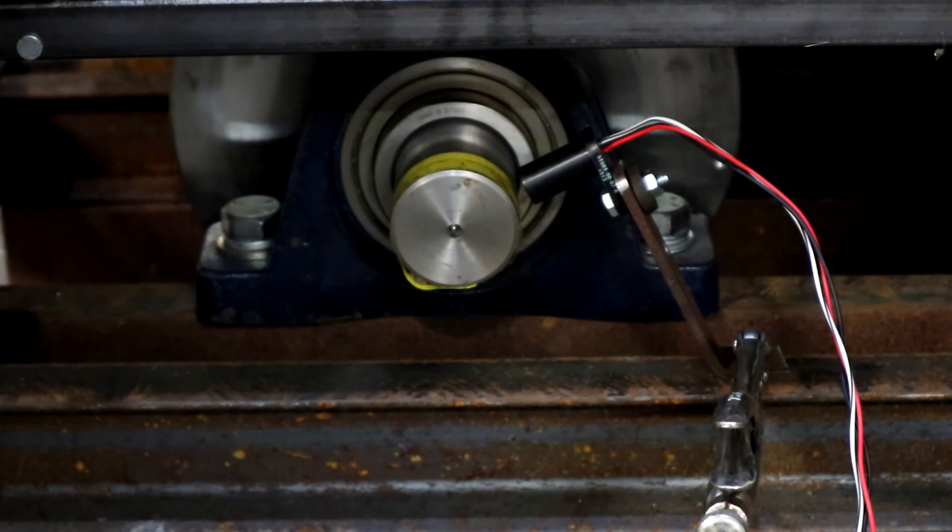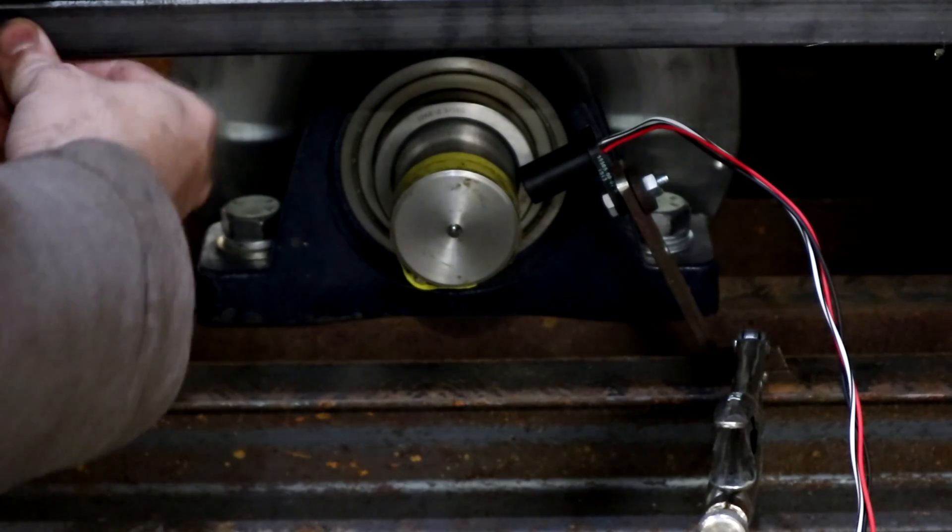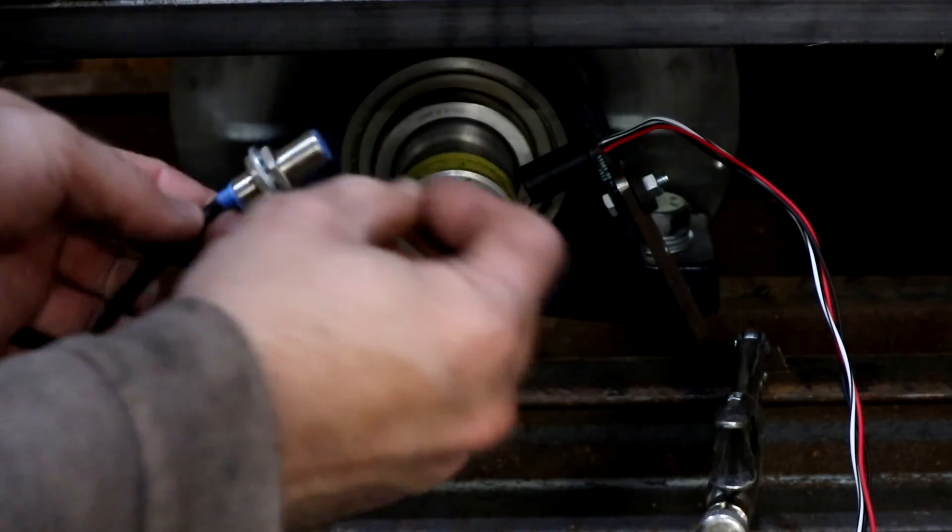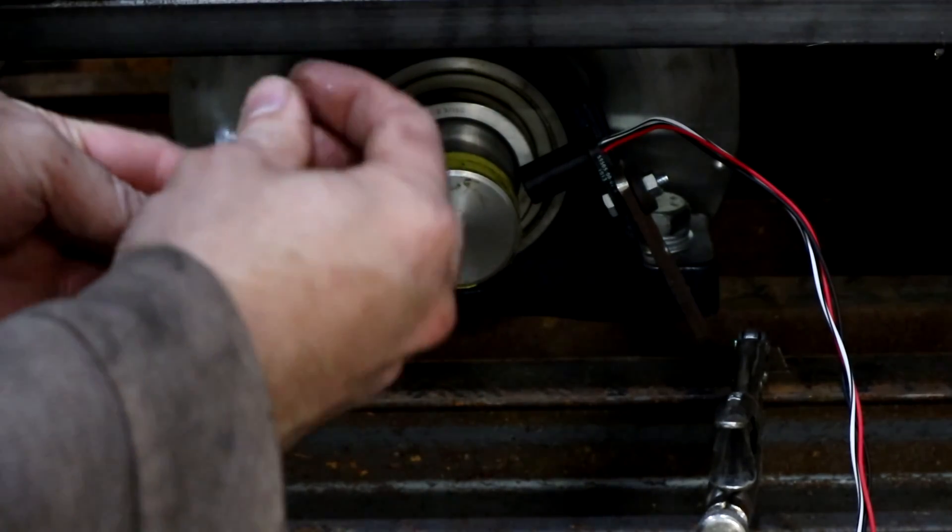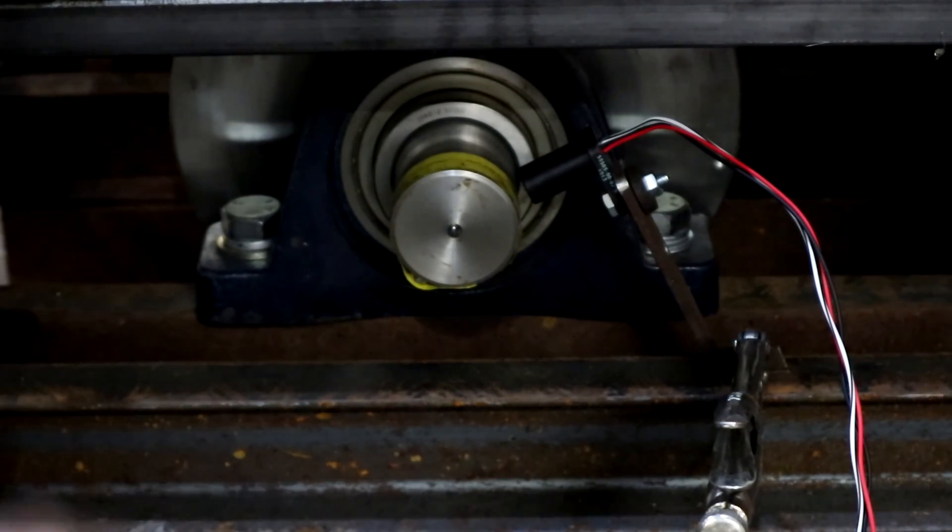I got it at DigiKey. I've seen them at Mouser. Pretty much any electronics store should be able to get you one of these. It's a three-wire with a 5-volt reference. Like I said, it's a gear tooth sensor.